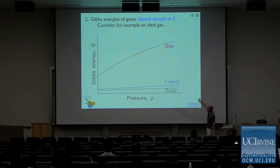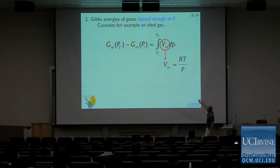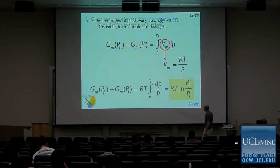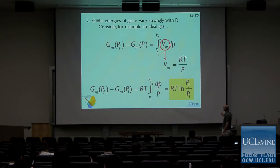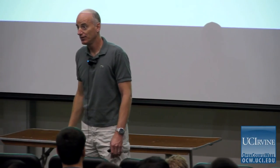For ideal gases we can substitute Vm from the ideal gas equation, move RT out front, and we've got one over P, giving us RT times log(P final over P initial). That is the equation that describes the change in Gibbs energy for an ideal gas as a function of pressure. We change the pressure and we have a very simple equation. This probably should go on your equations page for quiz 5.